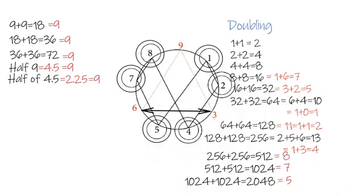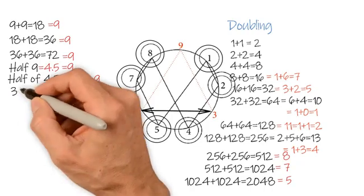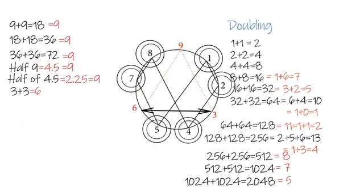Look at the 6 and 3. Let's find out what happens with these numbers if we get the mathematical functions. 3 doubled becomes 6. 6 doubled then becomes 12, and 1 plus 2 is 3.